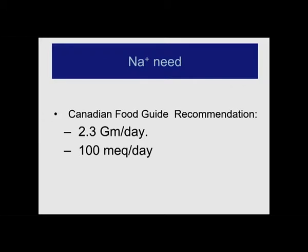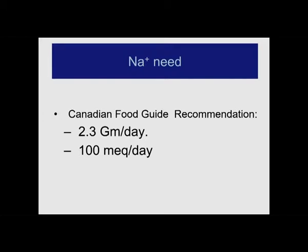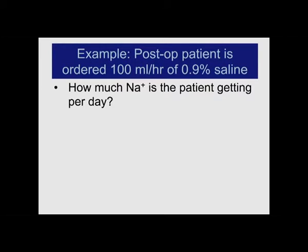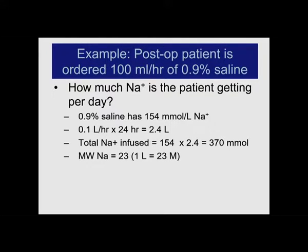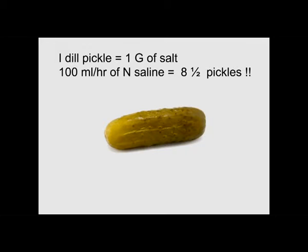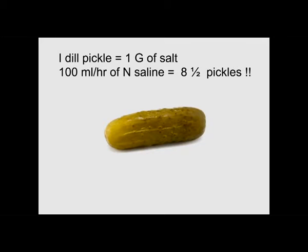Let us take an example. You are giving a post-op patient maintenance fluids — 100 mls per hour of 0.9% saline. How much sodium is that person getting? Each liter has 154 millimoles of sodium. At 100 mls per hour, that is 2.4 liters a day. Multiply that by the amount of sodium — that is 370 millimoles. The molecular weight of sodium is 23; multiply that and you end up with 8.5 grams. Remember, 2.3 grams is what is recommended. A kosher dill pickle is about a gram, so if you are giving 100 mls per hour, that is like a bottle of dill pickles with the juice.